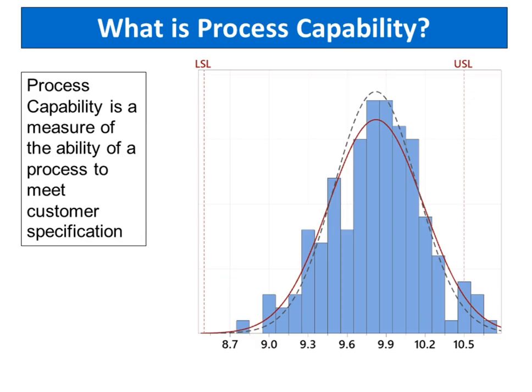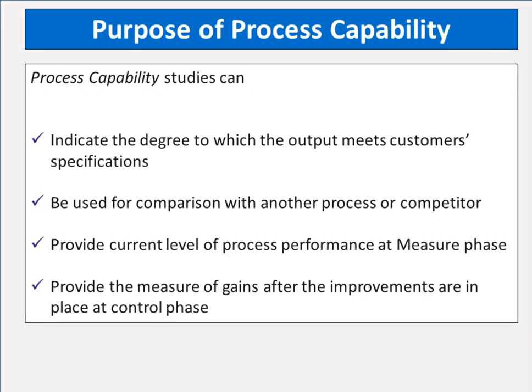Process capability is a measure of the ability of a process to meet customer specification. Process capability is defined as a statistical measure of the inherent process variability of a given characteristic. Process capability studies can indicate the degree to which the output meets customer's specifications, be used for comparison with another process or competitor.